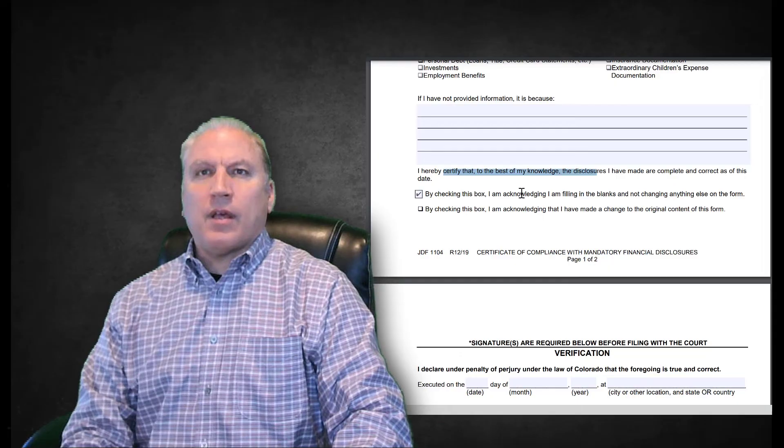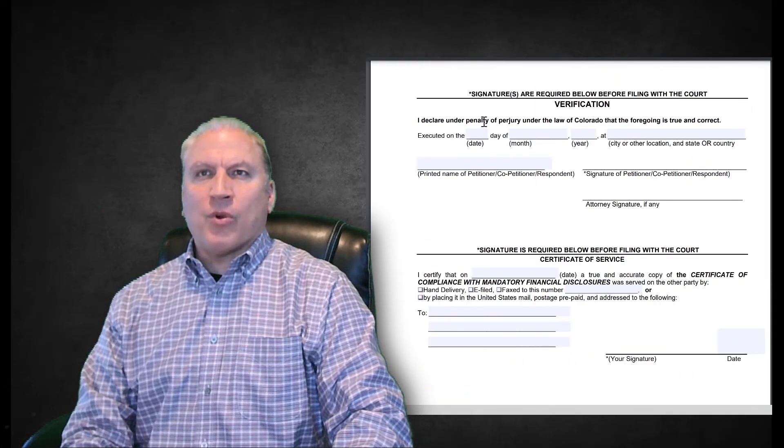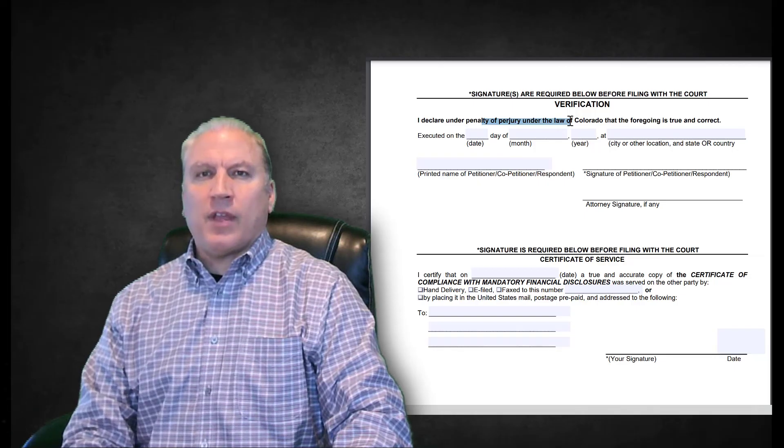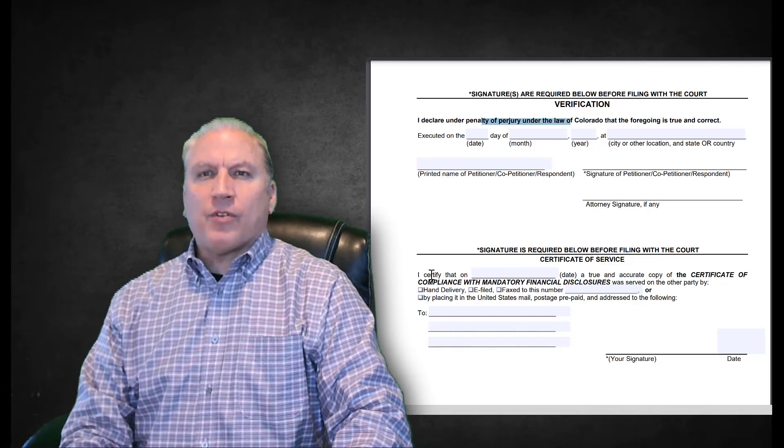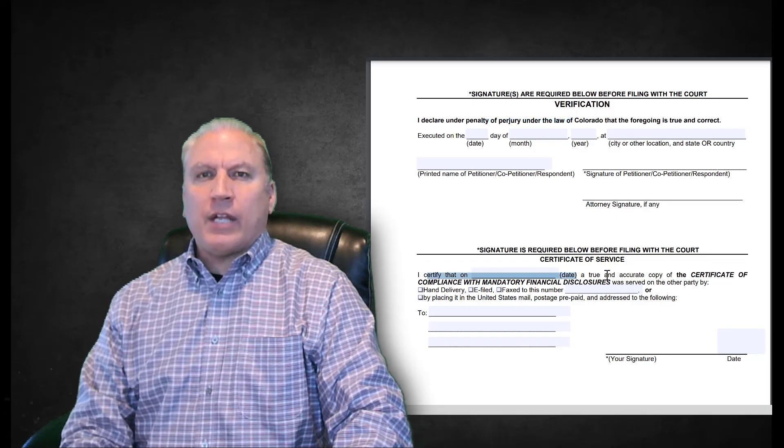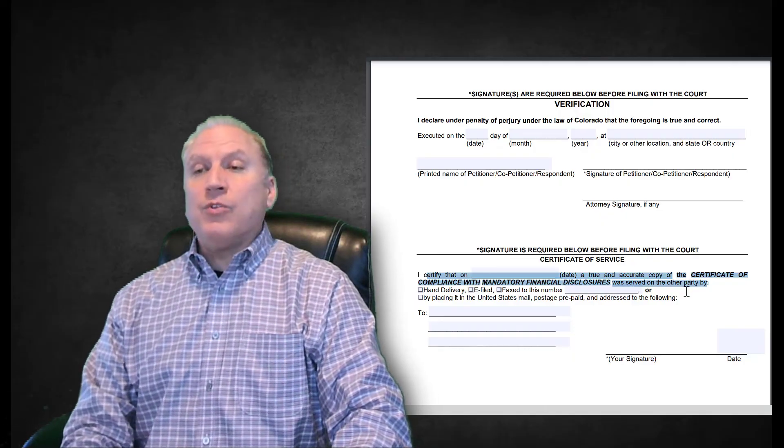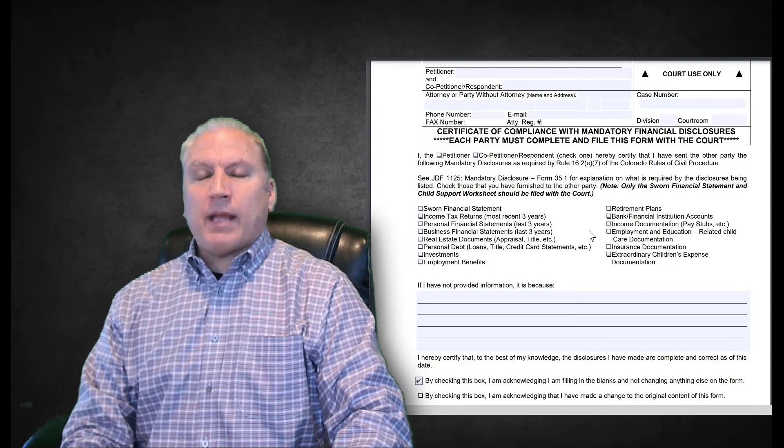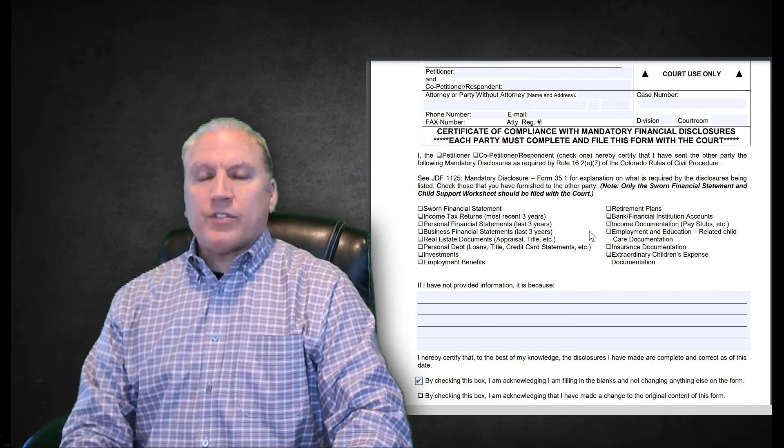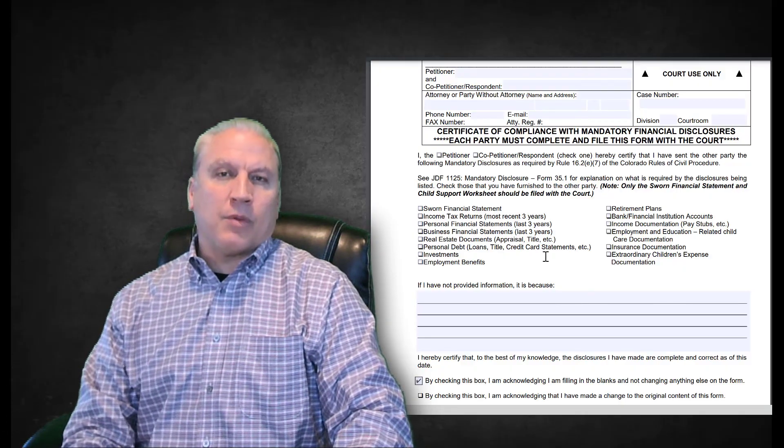Same thing: 'I certify to the best of my knowledge the disclosures are complete and correct, and I did not change anything else on the form, under penalty of perjury,' just like the other state. Signature is required. 'I certify that a true copy was served on the other party.' You have to give this to the other side of the case. So when you get it, the first thing you do is have all these documents inspected, audited, and verified so that when you go to court, if you find any discrepancies, you can bring that out, and that'll be your smoking gun.